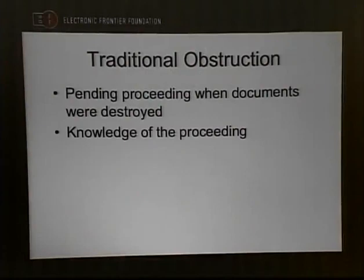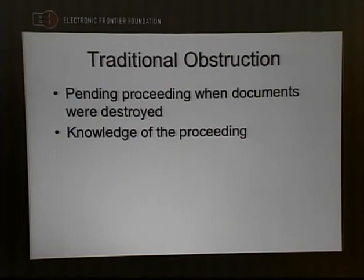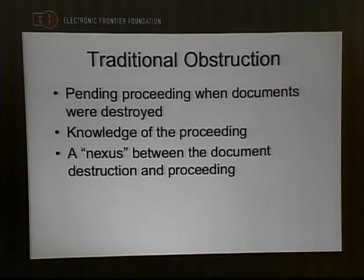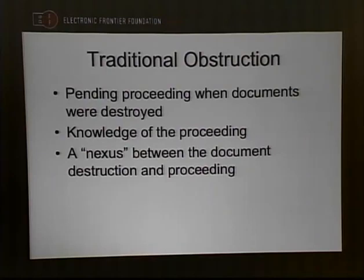Second, the person doing the obstructing usually has to have knowledge that the proceeding exists. So if you've been subpoenaed to testify before a grand jury and you decide to delete the ten emails they asked you about, you are in trouble. Third, there has to be a nexus between the document being destroyed and the proceeding — the item destroyed has to have some connection to whatever is being investigated. If they ask for emails from John Doe and you delete emails your mom sent you, that's not obstruction of justice.